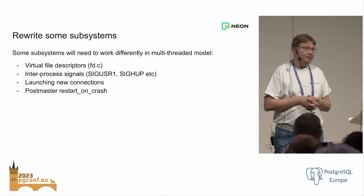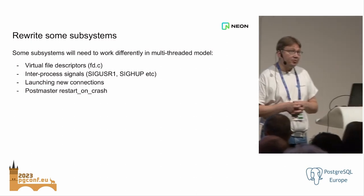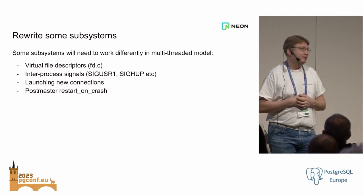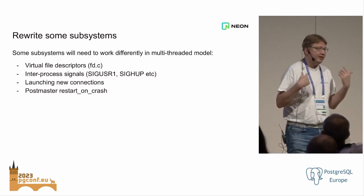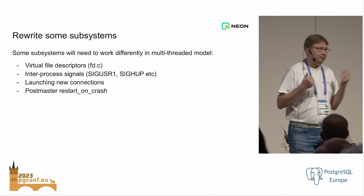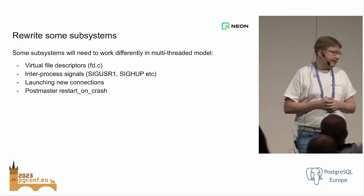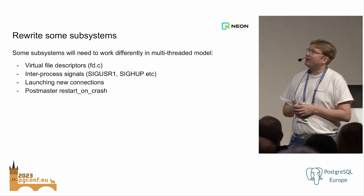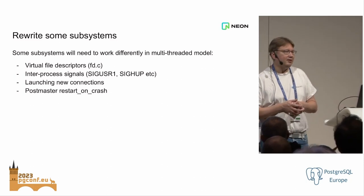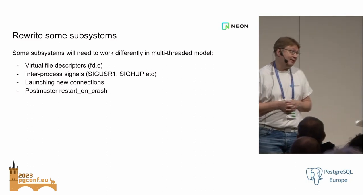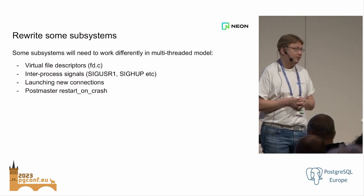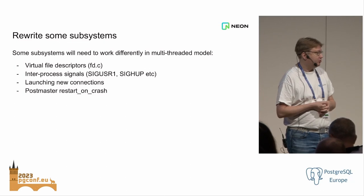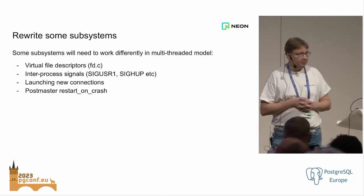There's also inter-process signals. We use signals between processes for a few things — if you change the config file, we send SIGHUP to all processes to make them react. Some caches need to be invalidated, so we send signals between processes. You can't really send signals between threads, or maybe you can — I'm not entirely sure. But most likely we would want to change these to not use Unix signals but something else, like a pthreads mechanism. I think that's one subsystem we'll need to rewrite, and it will work differently with threads versus processes.